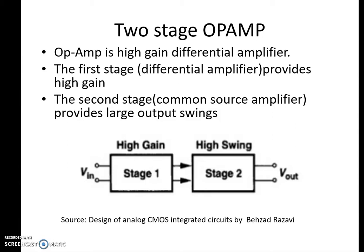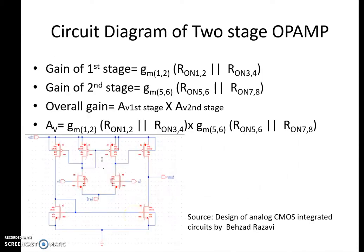Here we are considering a two-stage op-amp. As we all know, it is nothing but a high-gain differential amplifier. The first stage of the two-stage op-amp is a differential amplifier and it provides high gain. The second stage is a common source amplifier and it provides large output swings. The circuit diagram of the two-stage op-amp is as shown here.